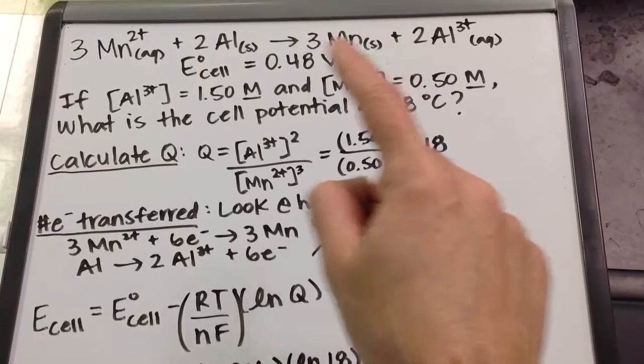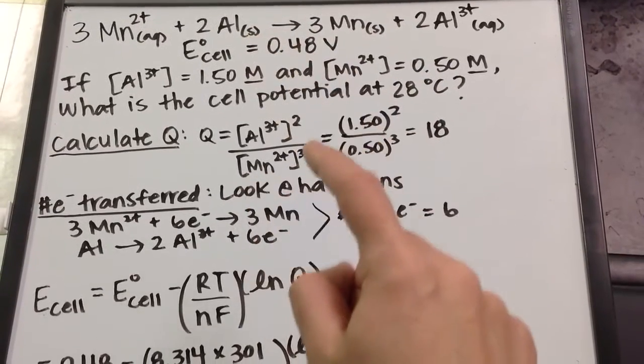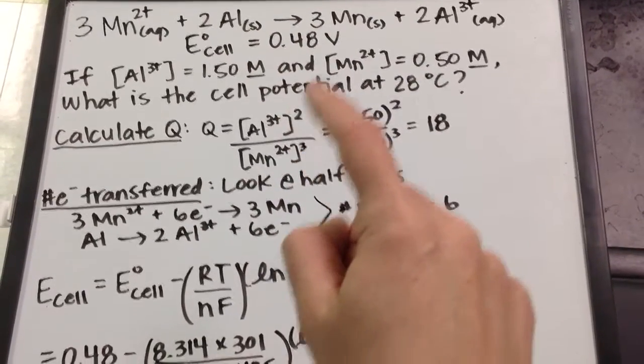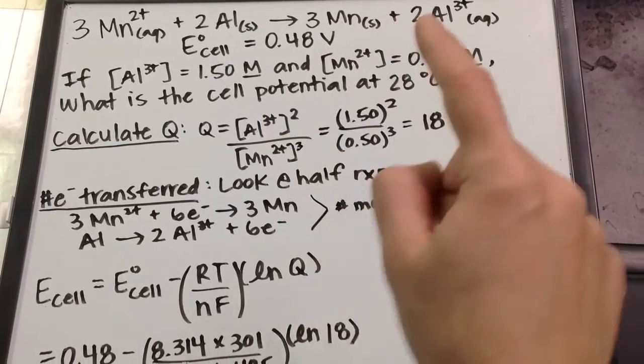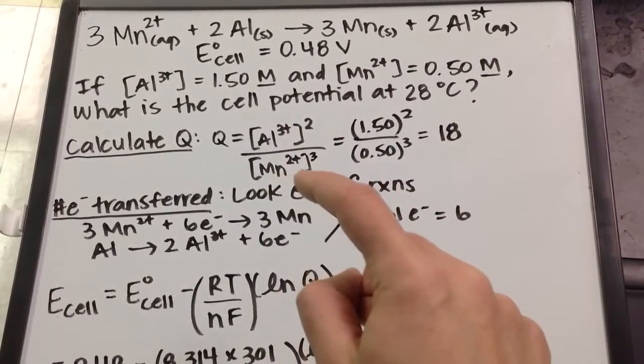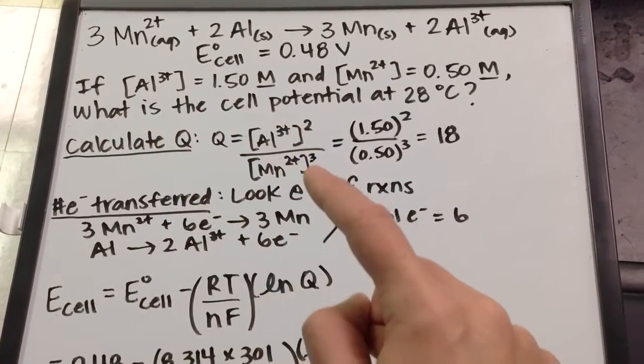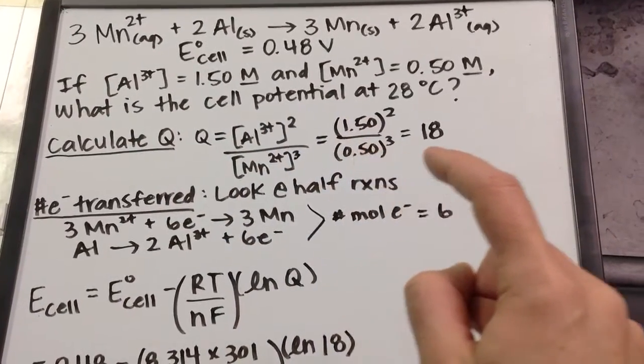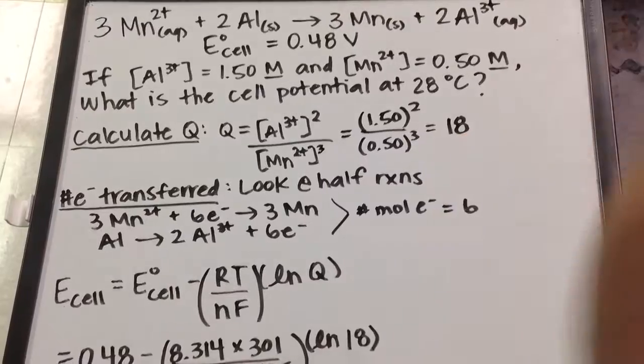We omit the two solids because they're not participating in the equilibrium. So it's just [Al³⁺]² because the coefficient is 2, divided by [Mn²⁺]³ because the coefficient is 3. I plug in those two values and my reaction quotient comes out to be 18.